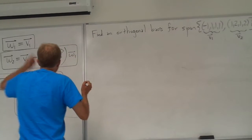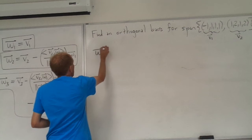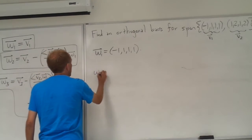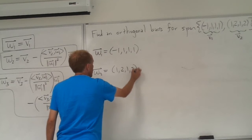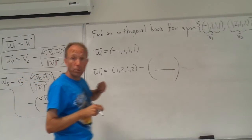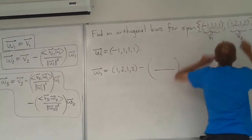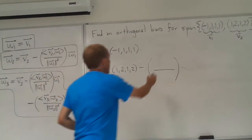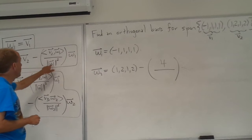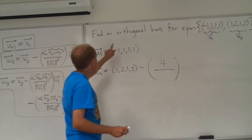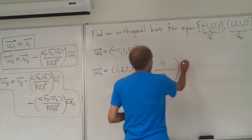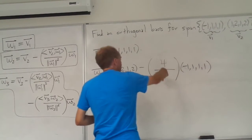If we just follow this process, it is very quick. w1 is just the same vector as v1, so we will just write that down. And then for w2, we take v2, which is (1, 2, 1, 2), and we subtract the inner product of v2 with w1 — that is really just the inner product of these two vectors, which is going to be 4. Using the standard dot product for R4, and then on the denominator we have to put the norm squared of w1, which is 1² + 1² + 1² + 1² = 4.